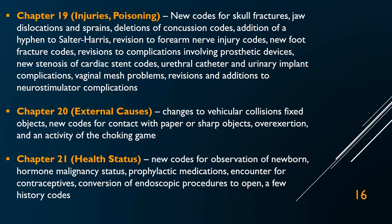Chapter 21 covers health status codes — the old V codes from ICD-9 are now Z codes. These describe an encounter not for a disease but for a checkup or similar. There are some new ones for observation, newborn status, hormone malignancy status, prophylactic medications, and contraceptives. There are six new Z30 codes for contraceptives that are more specific for encounters. There are also a few changes to endoscopic procedures and history codes. That is your five-minute version of all 2,700 changes to ICD-10 this year.